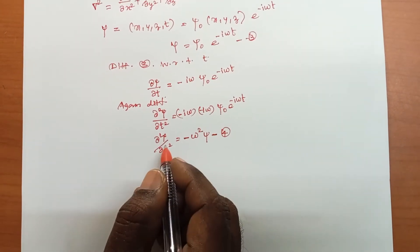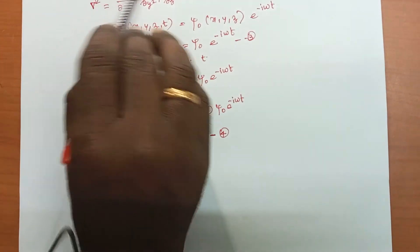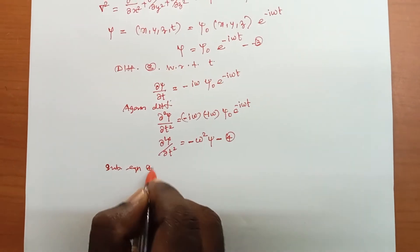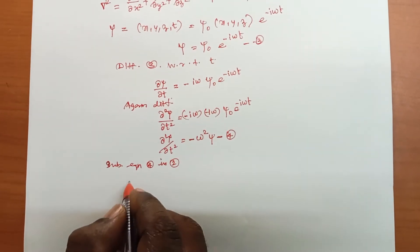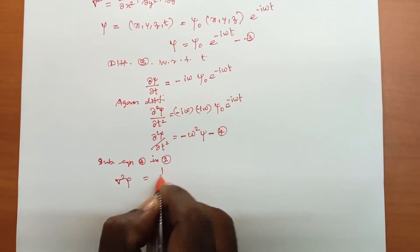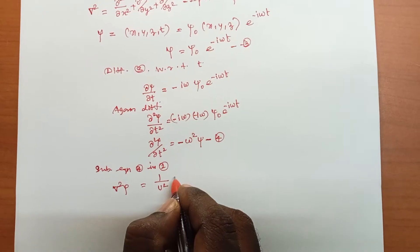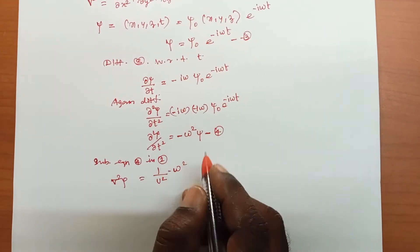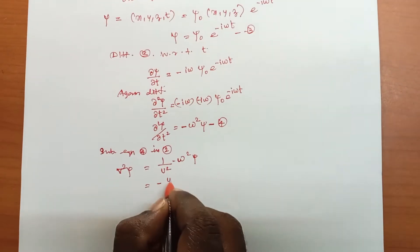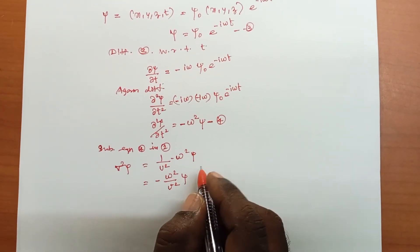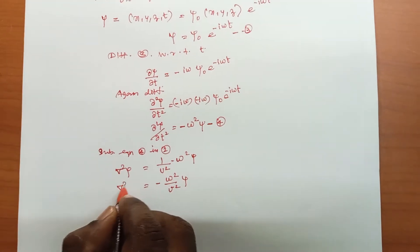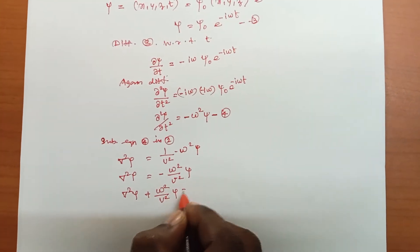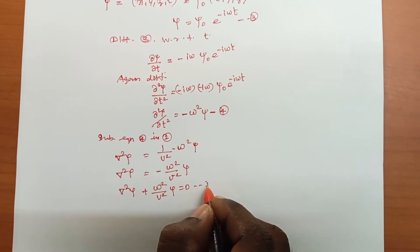Substituting equation 4 into equation 2: ∇²ψ = (1/v²)(−ω²ψ). Rearranging, we get ∇²ψ + (ω²/v²)ψ = 0. This is equation number 5.